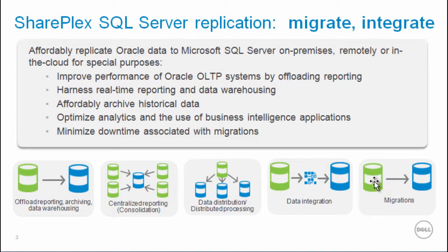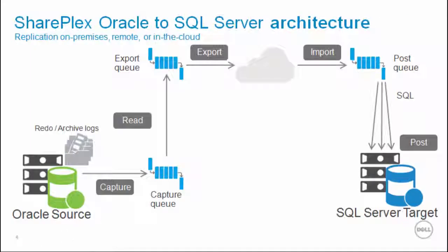Migrating an Oracle database to SQL Server can be done with minimal system and business impact. SharePlex architecture for Oracle to SQL Server is the same as for Oracle to Oracle, with the same queues and processes. The post-process connects to the SQL Server instance via ODBC. The configuration file, which tells SharePlex what to replicate and to where, is slightly different, using an R notation in the routing map rather than an O, which would depict Oracle.